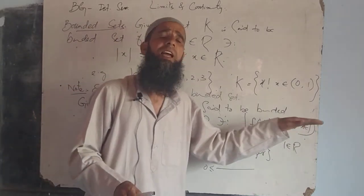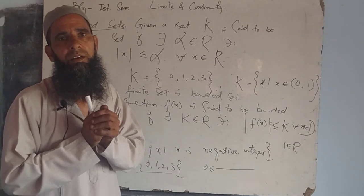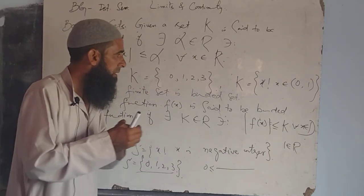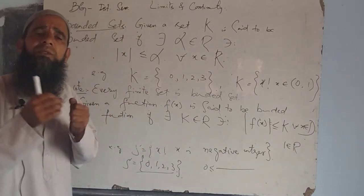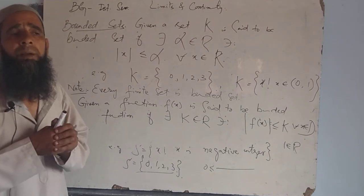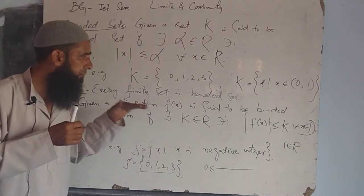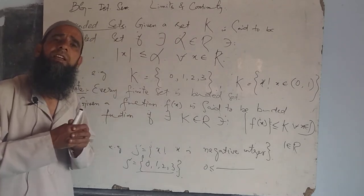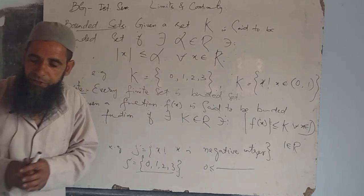Remember this definition: given a function is said to be a bounded function if there exists K in R such that the modulus of f(x) is less or equal to K for all X belonging to the domain set. In the next lecture, we will discuss one of the important properties of limits and continuity, where we will use these definitions. Thank you, have a nice day.